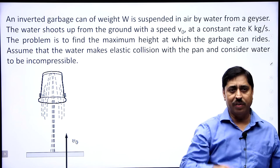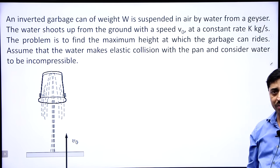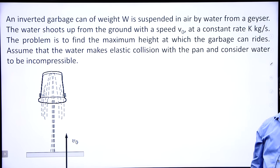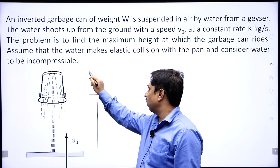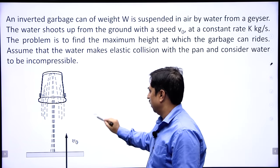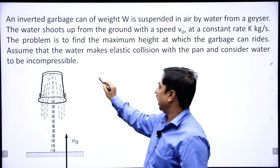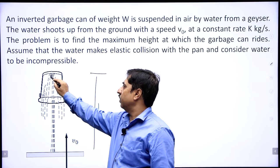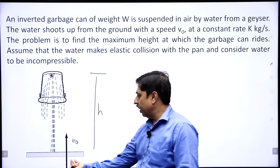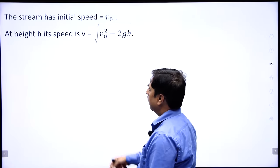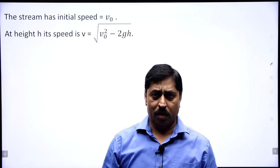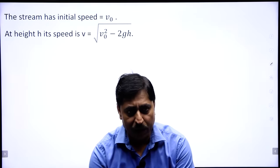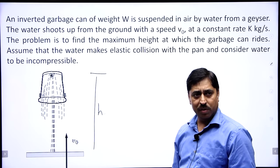I think this is a fairly easy question and all of you should give it a try. The stream has initial speed v naught. If this height is h, then what will be the speed of the water particles at height h? It is quite easy to understand that the speed of the water particles at height h will be given by √(v₀² − 2gh). We are applying Bernoulli's equation to get this.